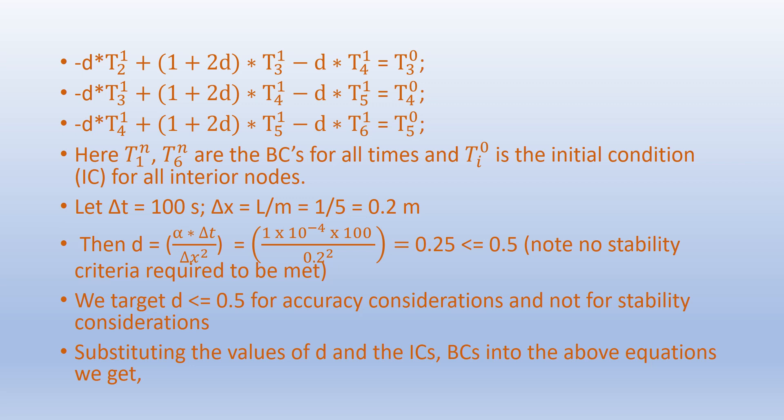Delta x equals L divided by the number of segments, which is 1 over 5, equal to 0.2 meters. Then D equals alpha times delta t divided by delta x squared, which equals 1×10⁻⁴ times 100 divided by 0.2 squared, equals 0.25 — which is less than or equal to 0.5. Note that since this is an implicit method we don't need to meet the stability criteria, but we still target D within 0.5 for accuracy considerations and not for stability considerations.